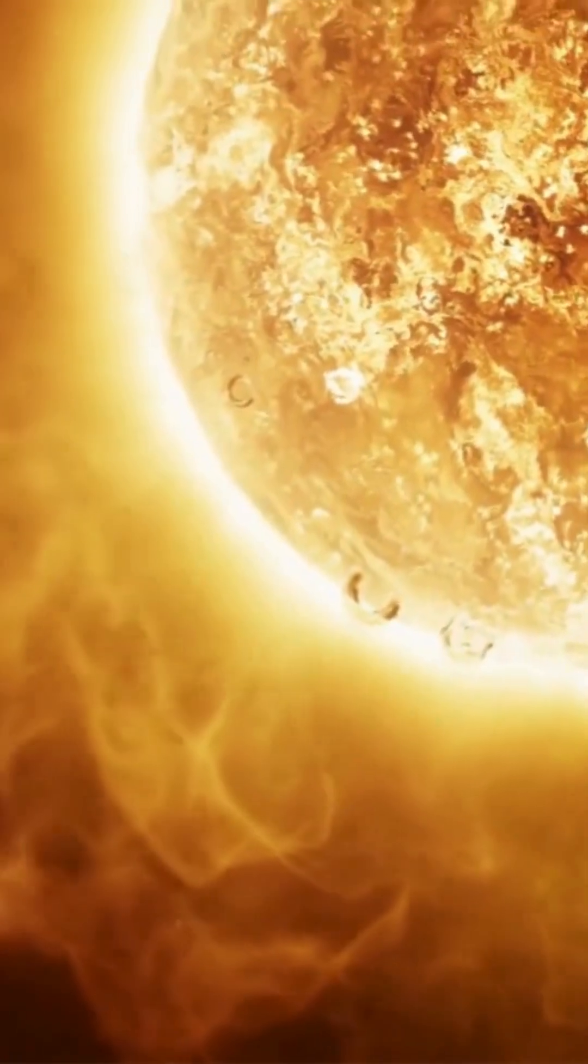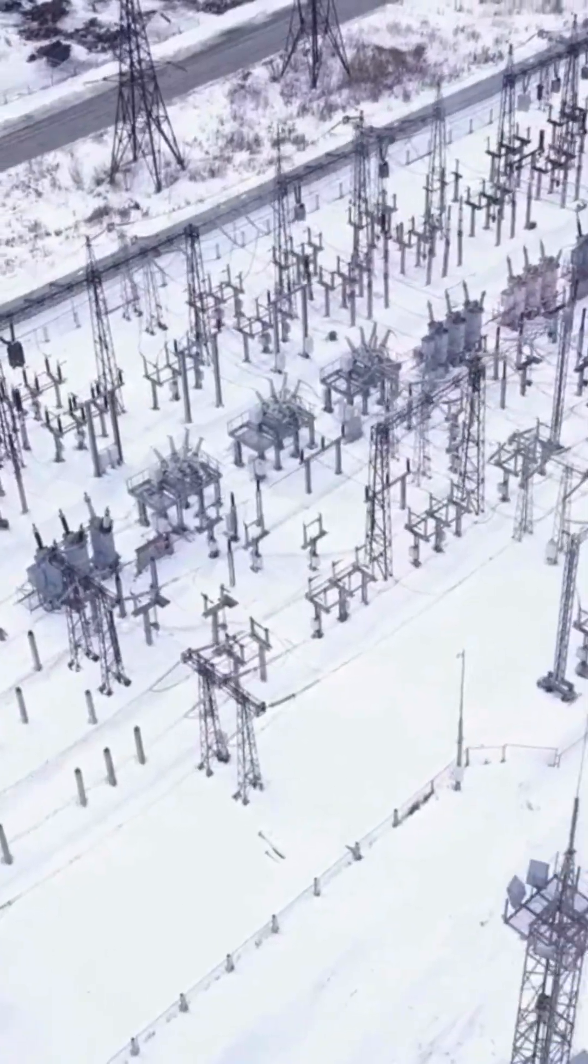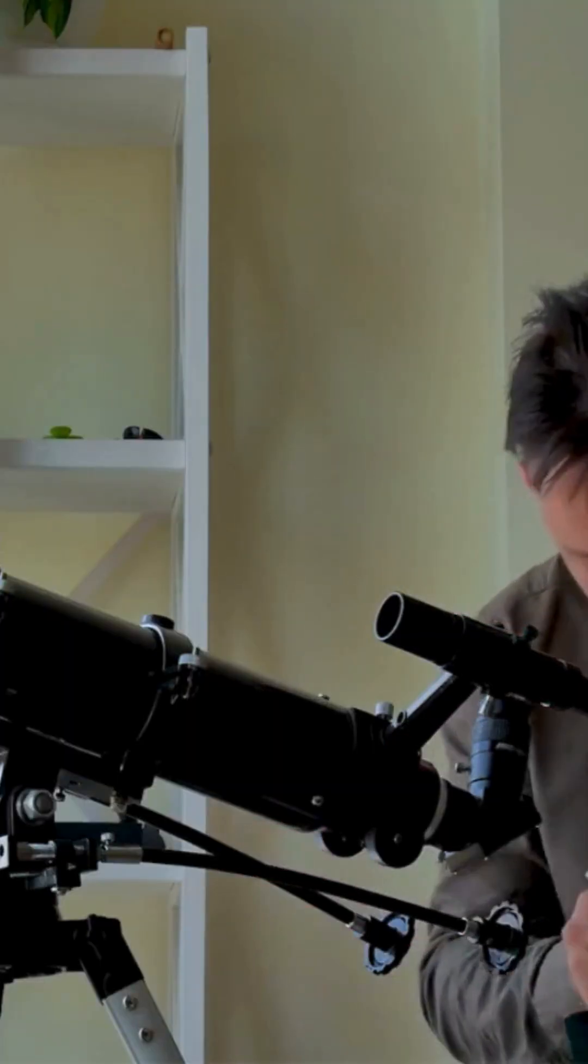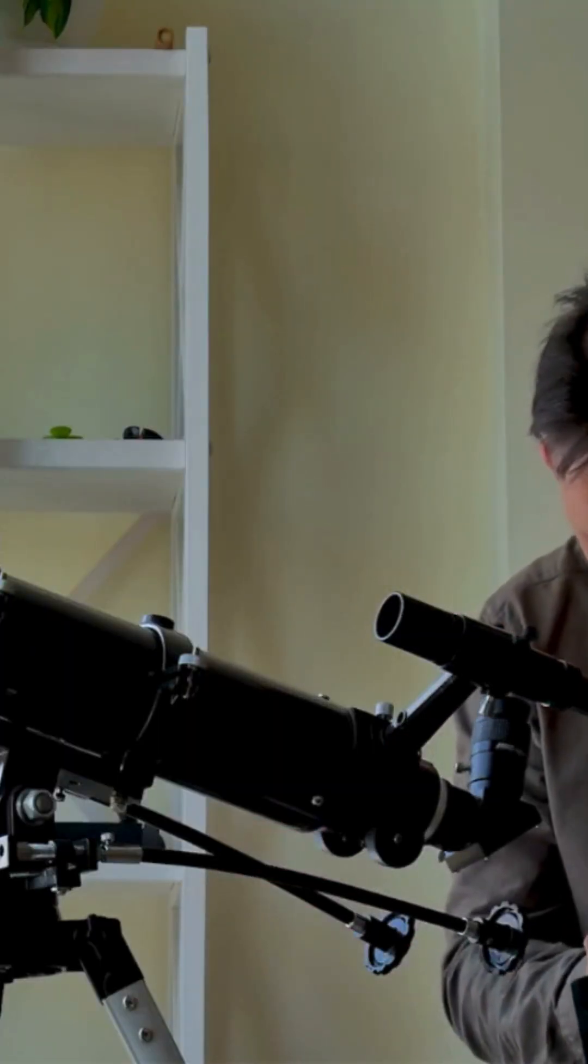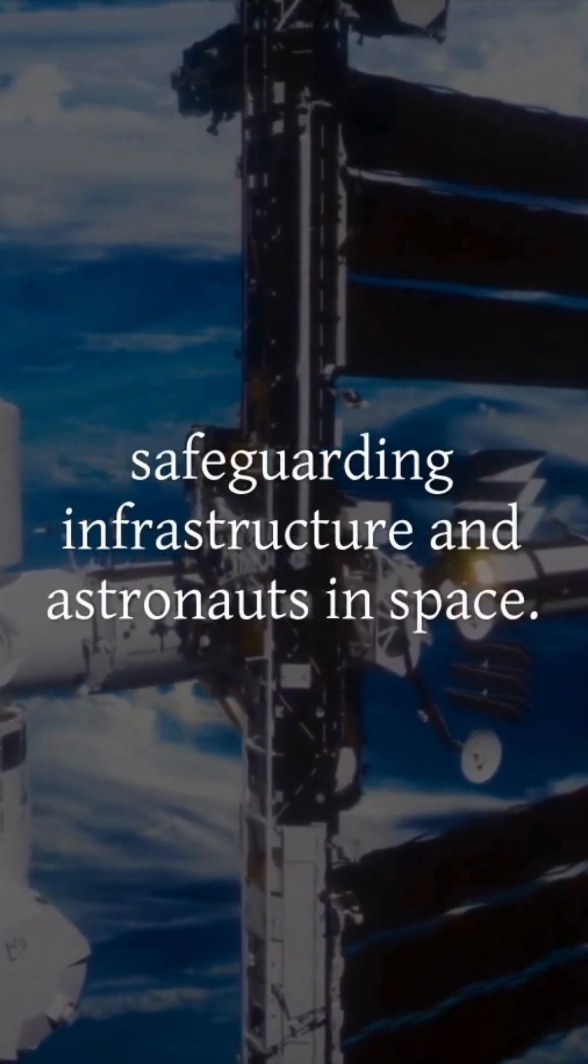Solar activity such as flares and coronal mass ejections also impacts technology. These eruptions can disrupt power grids, satellites, and GPS systems. By analyzing sunlight and solar radiation, researchers forecast space weather, safeguarding infrastructure and astronauts in space.